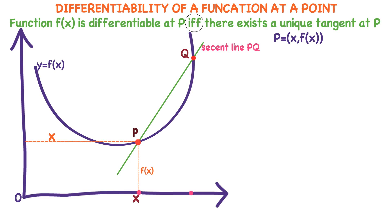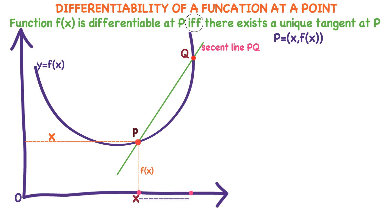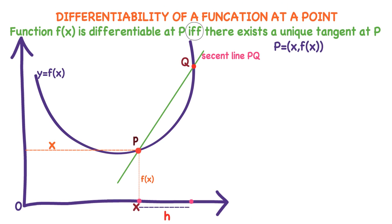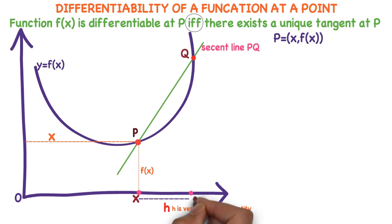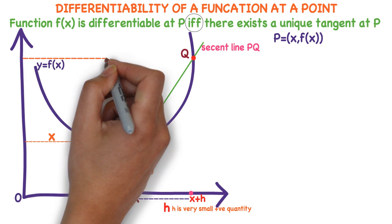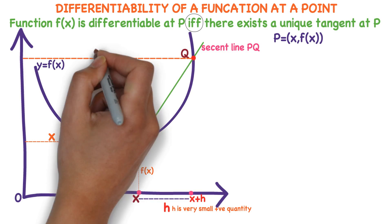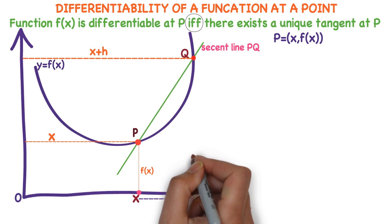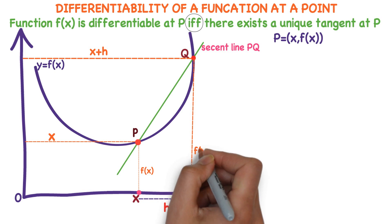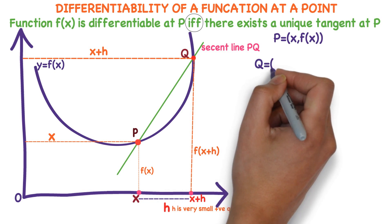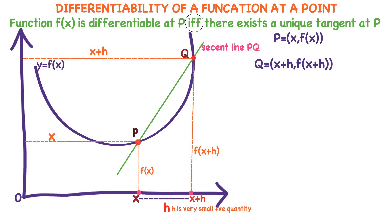Now, where is point Q? Move towards the right from point P, at a distance of h units, where h is a very small positive quantity. Q is a point at a distance of x plus h units from the y-axis. This length is x plus h, and the height of the curve at Q is f of x plus h. So Q is x plus h comma f of x plus h.